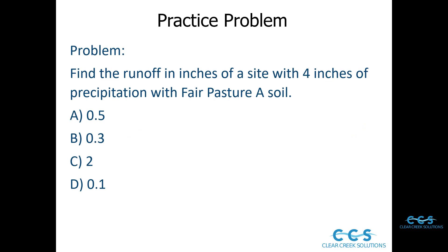Here's the practice problem: Find the runoff in inches of a site with four inches of precipitation with fair pasture, A soil. This is a very typical FE-style practice problem. We have answer choices A, B, C, and D: 0.5, 0.3, 2, and 0.1.